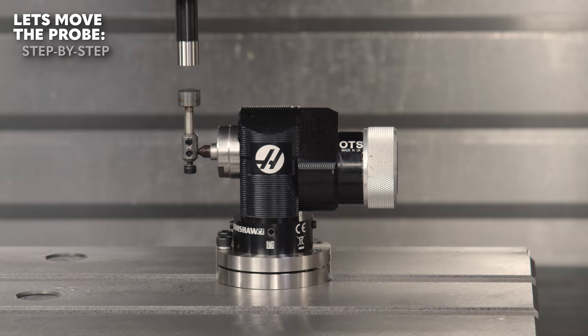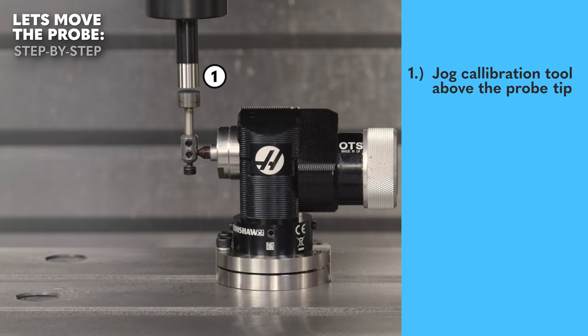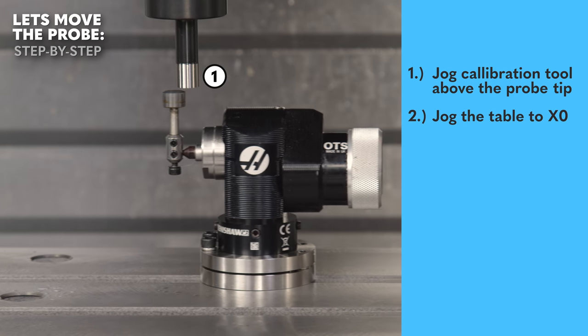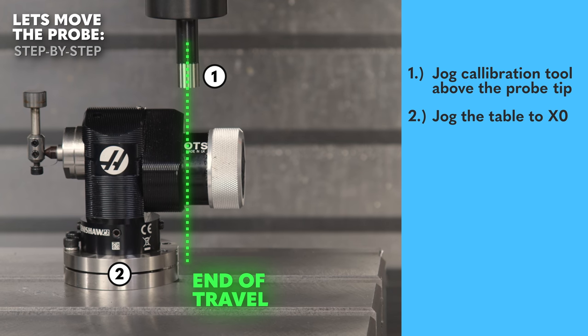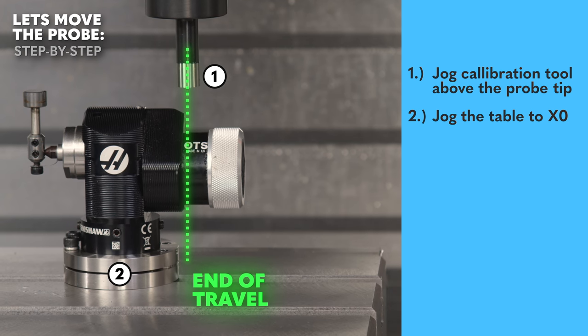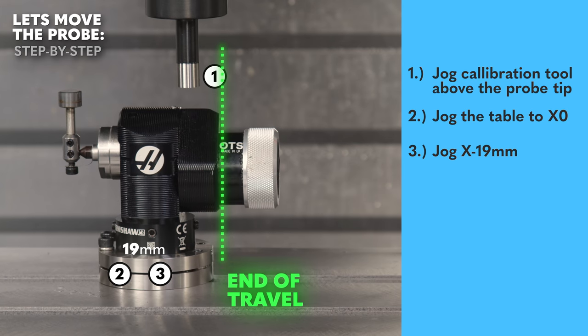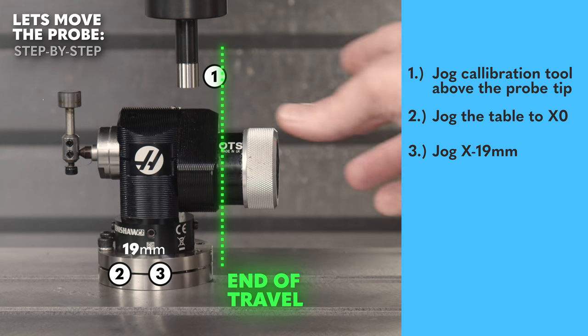Here, look at this. We'll take our calibration tool and jog it down above the probe tip. We'll then jog it all the way to our machine zero, X zero. Once there, we're going to jog it back to the right side by 19 millimeters, or three quarters of an inch, 0.75 inches.